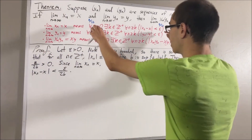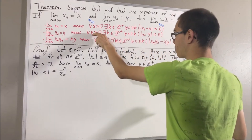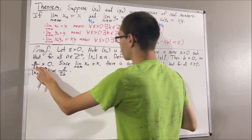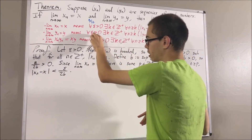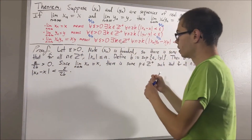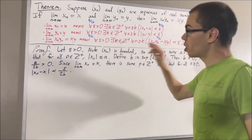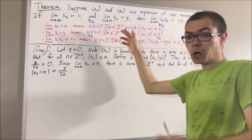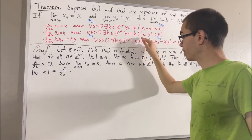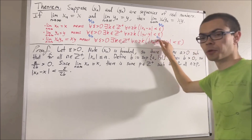In a similar way, we consider the second statement. Since this statement works for every positive real number, it must work for the positive real number epsilon over 2b. Taking this epsilon to be epsilon over 2b, there is some positive integer — I'll call q — such that for all positive integers n greater than or equal to q, the absolute value of yn minus y is less than epsilon over 2b.